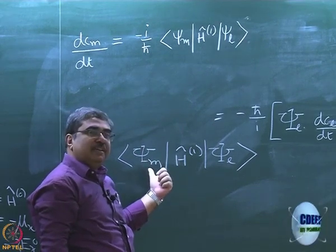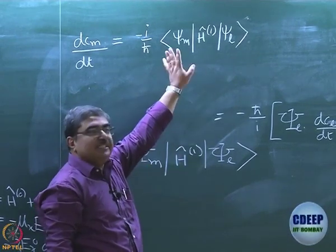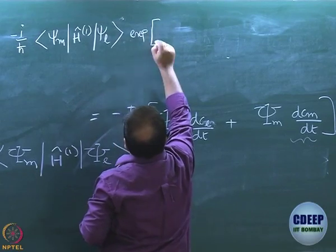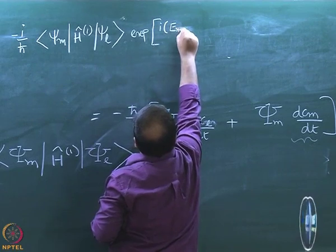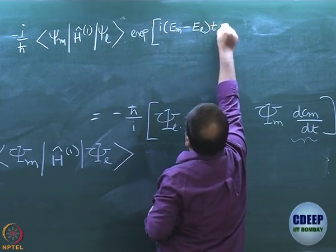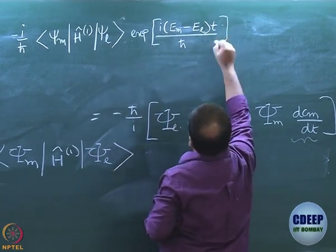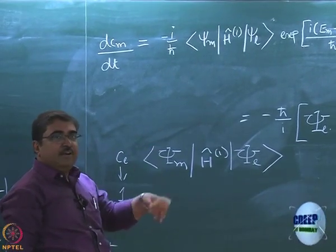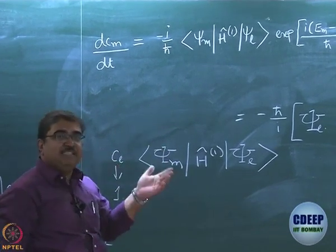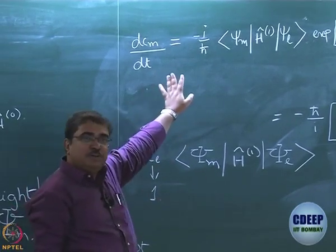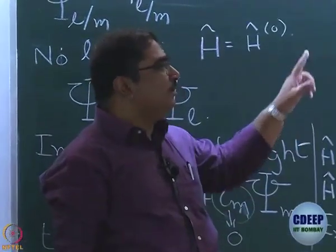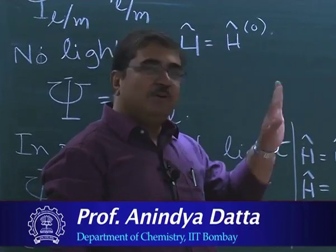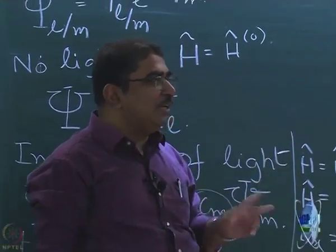The time-dependent part comes out as exponential i times (EM minus EL) t divided by h-bar. In the textbook it's written as minus i times (EL minus EM), so it's the same thing. This is where we had reached. Now we are going to use this and proceed with the next part of the discussion. Any questions up to this? Now you have to be careful because now is where our opinions seem to differ.